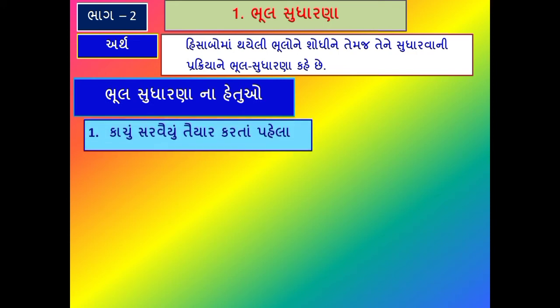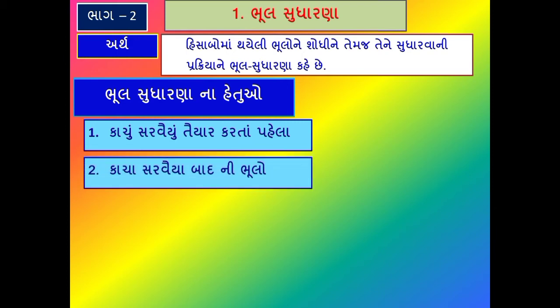ભૂલ સુધારણાના હેતુઓ અંગે ચર્ચા કરીએ. નંબર એક: કાચું સરવૈયું તૈયાર કરતાં પહેલાં - જ્યારે લખેલ હિસાબ, પ્રક્રિયા અને ત્યારબાદ કાચું સરવૈયું તૈયાર કરવામાં આવે છે - અથવા રોકડ મેળ, પેટા નોંધ અને ખાતા તૈયાર કરતાં પહેલાં ભૂલ સુધારણા. ત્યારબાદ નંબર બે: કાચા સરવૈયા બાદની ભૂલ.